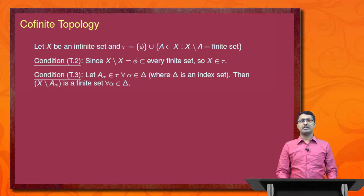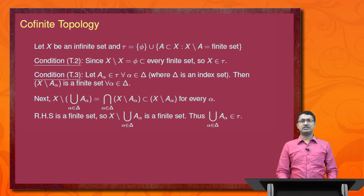For condition 3, let A_alpha belong to tau for each alpha in the index set delta, so X minus A_alpha is a finite set for each A_alpha not equal to phi. Now, X minus the union of A_alpha equals the intersection of (X minus A_alpha), by elementary set theory. This intersection is a subset of X minus A_alpha for every alpha, and since the right-hand side is finite, X minus the union of A_alpha is finite. Thus the union of A_alpha belongs to tau.